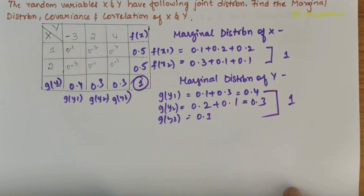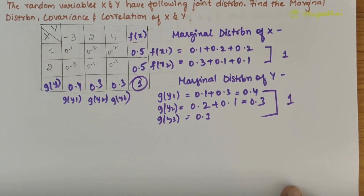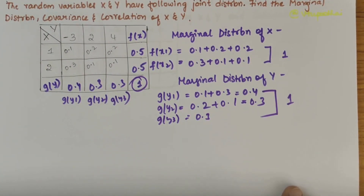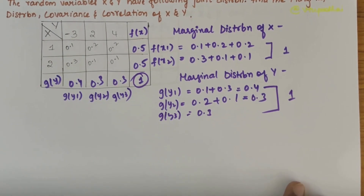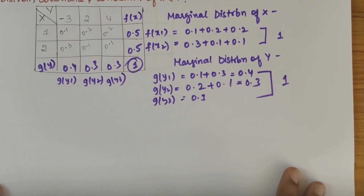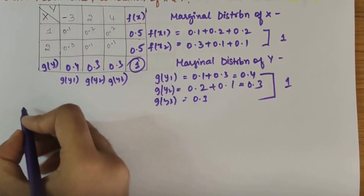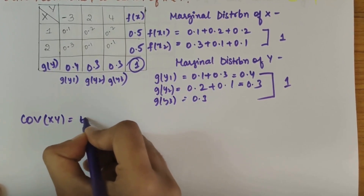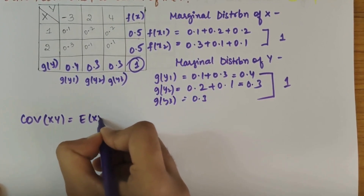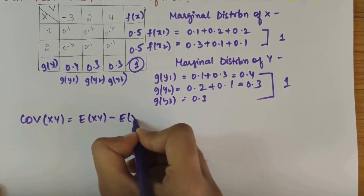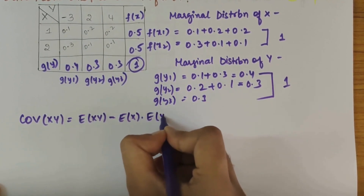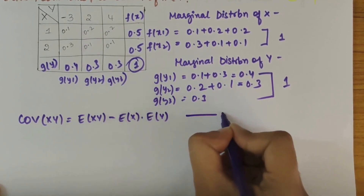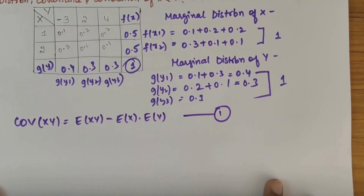So we can say that the marginal distribution values of x and y are correct. Now let's look into the covariance. The covariance formula is: Cov(x, y) = E(xy) minus E(x) into E(y). This is our first equation.